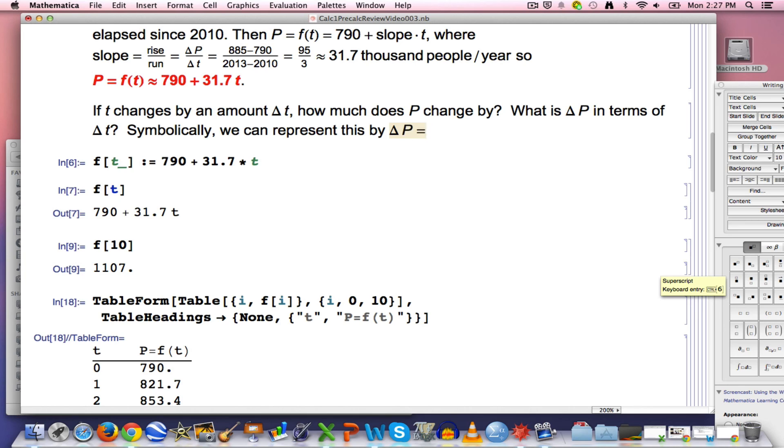Symbolically, we can represent this by this equation, delta P equals, and here's where the function notation comes in handy, the function name. The function output at T plus delta T. I'm pretending T is the initial value of T. If I change T by delta T, the new value is going to be T plus delta T. Now actually, delta T could be a negative number, so T plus delta T could be less than T. Usually, when you're thinking about this, you're imagining delta T would be positive, so T plus delta T is bigger than T. That's the new value after T has changed from the value T to T plus delta T. What's the old value? It was f of T. This difference is going to represent the change in the population.